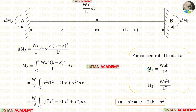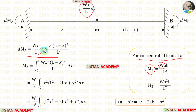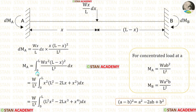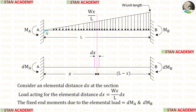Using the formula for MA for a concentrated load at distance A: instead of W we apply WX upon L · DX, instead of A we apply X, and instead of B we apply L minus X. To find MA, we integrate with limits 0 to L, because the triangular load acts from 0 to L.